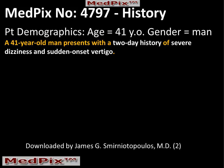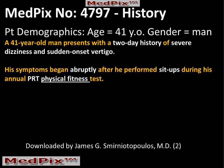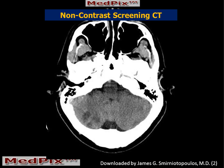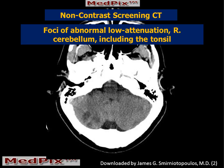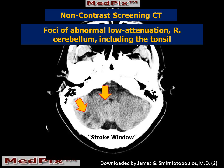Our patient is a 41-year-old man who presents with a two-day history of severe dizziness and sudden-onset vertigo. His symptoms began abruptly after he performed sit-ups during his annual physical fitness test. A non-contrast screening CT demonstrates multiple areas of abnormal low attenuation involving the right cerebellar hemisphere and tonsil. These are easier to see with a stroke window setting.